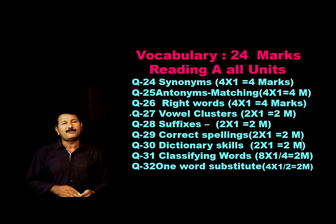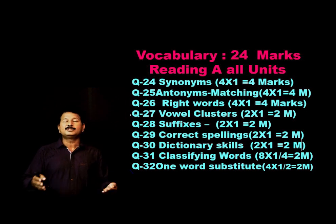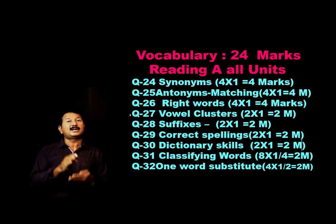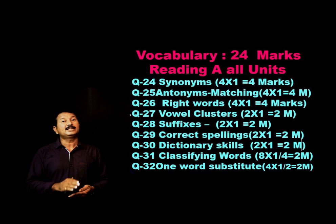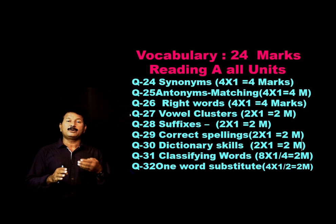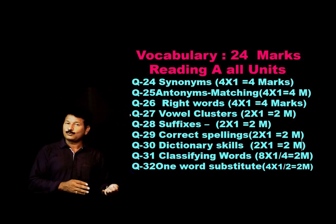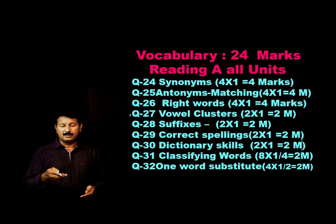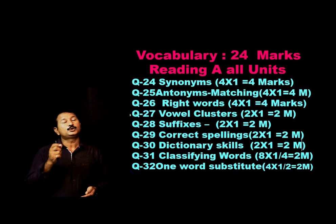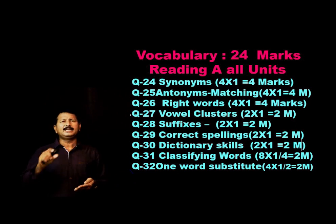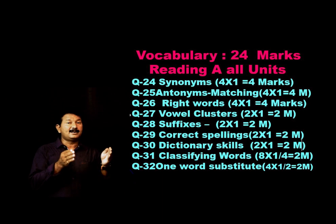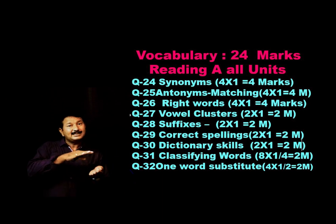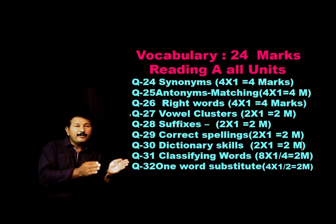Question number 31 is all about classifying words — put the words under correct headings. For example, in unit 1: positive qualities and negative qualities. In unit 2: sounds — alliterative sounds like 'ding dong.' Read all these words first, then try to put them under the correct headings. If you find a sequence or correlation between a word and a heading, move to the next option if needed.